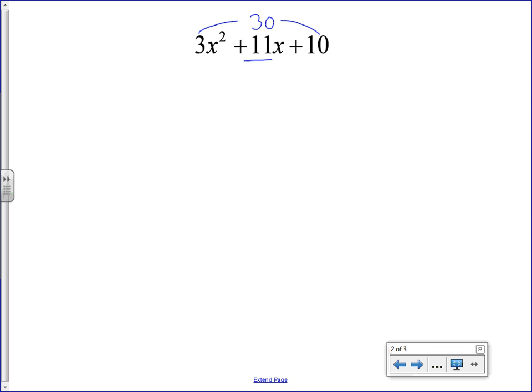So once I pick my two factors, 5 and 6, I'm going to use those as coefficients when I split the middle term. So I'm going to rewrite this expression, 3x to the second power.